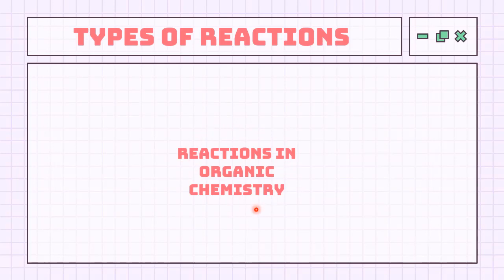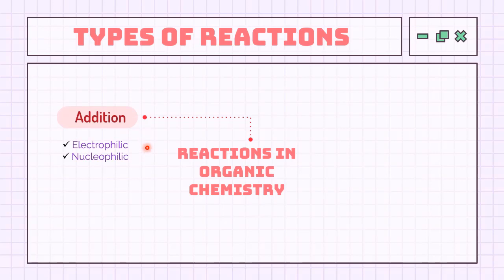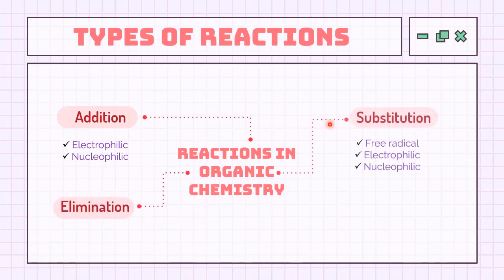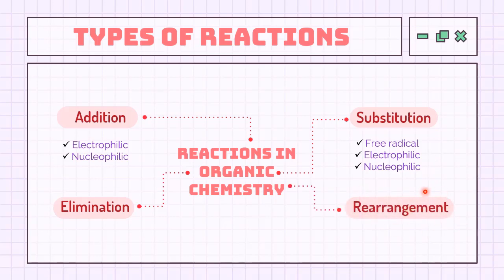There are four types of reactions in organic chemistry. The first is additions, which can be further divided into electrophilic additions and nucleophilic additions. The second is eliminations. The third is substitutions, which include free radical substitution, electrophilic aromatic substitution, and nucleophilic substitution. The last is rearrangement.